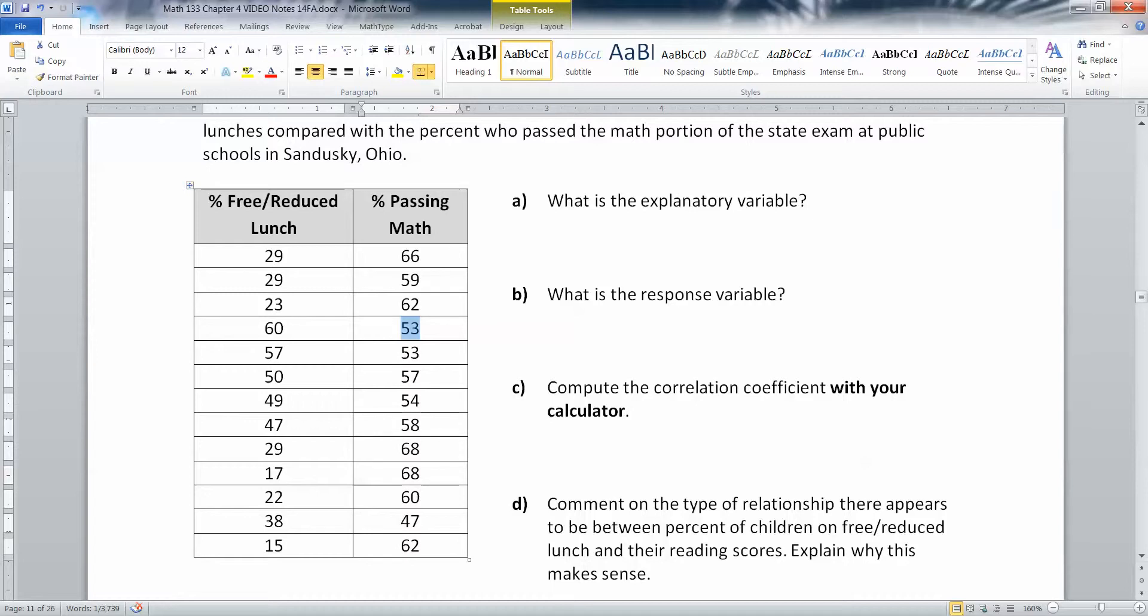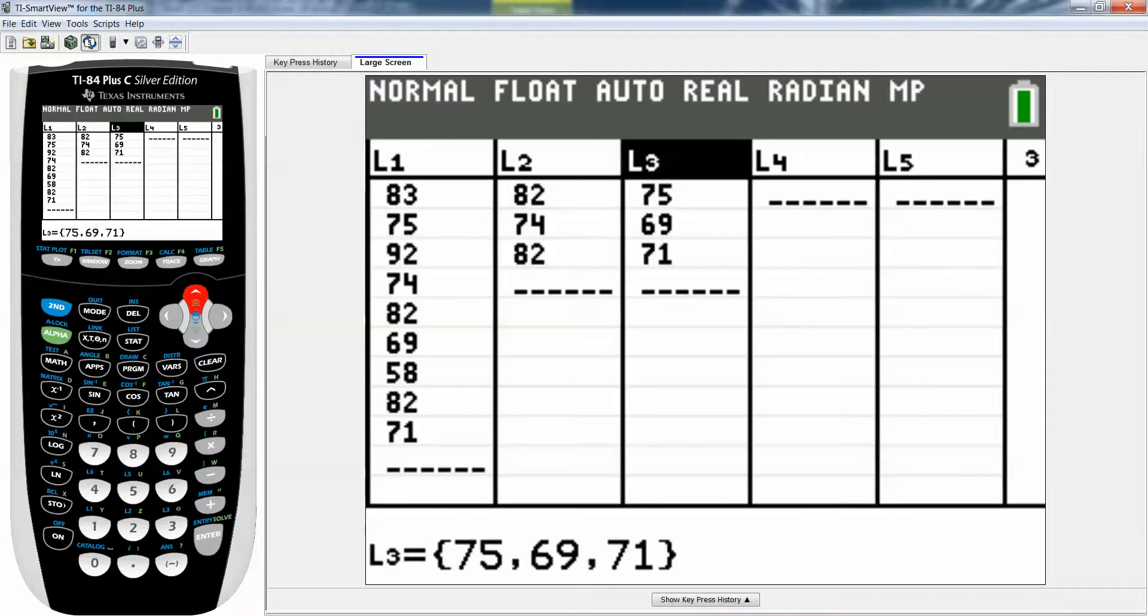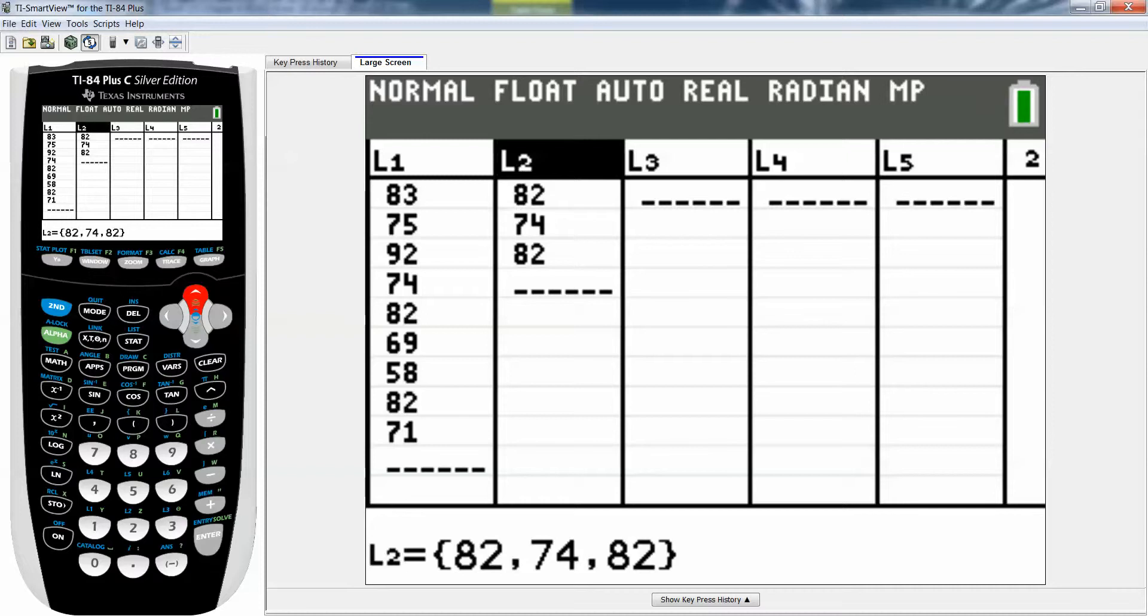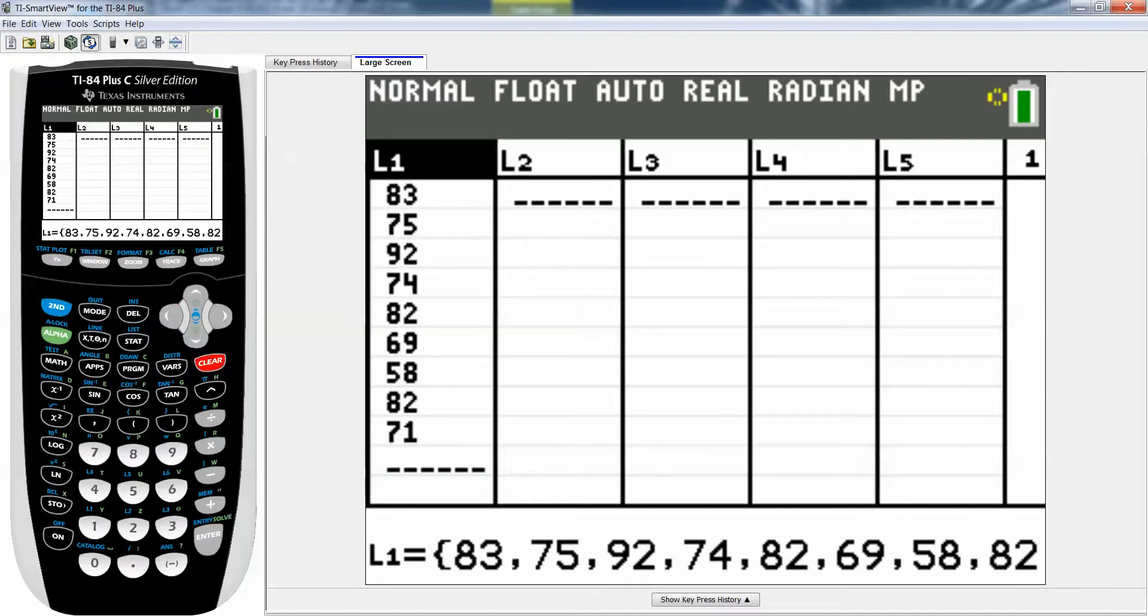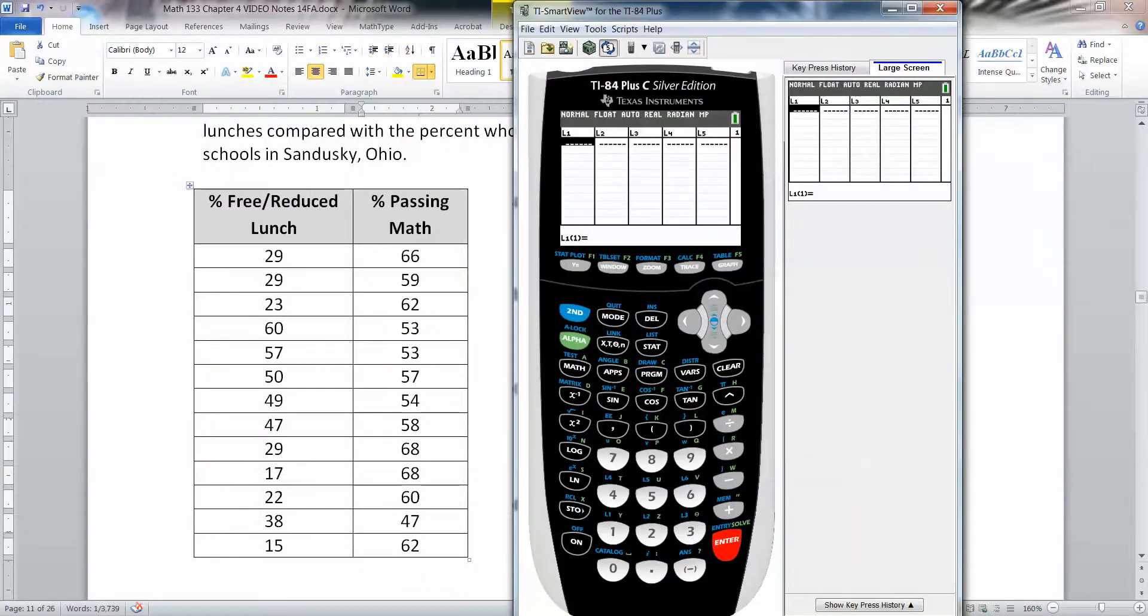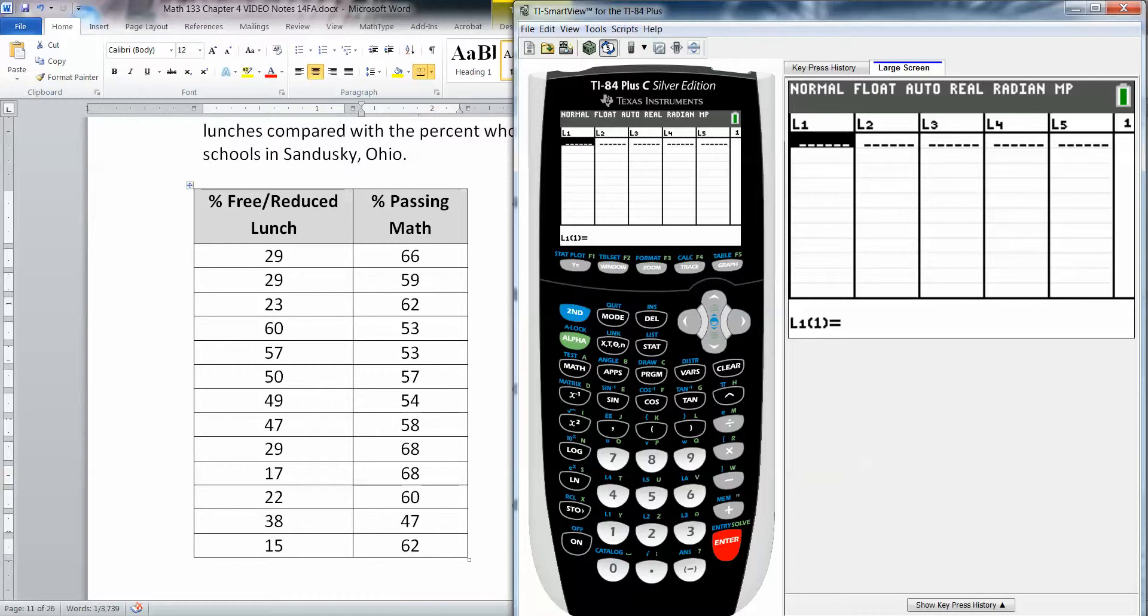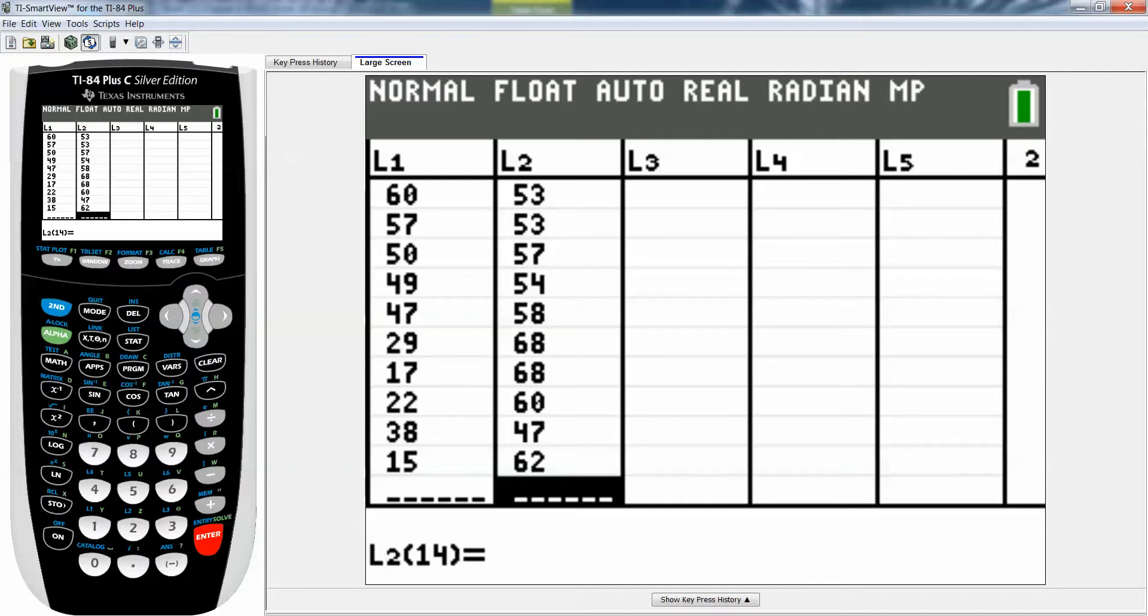I'm going to go to stat, press number one for edit or enter. I'm going to clear out all my old stuff from a previous video. Go up and clear it out, and then I want to enter in my data. I'm going to type 29 and so on. I'll be right back, I'm gonna finish filling out these data. All right, I've got all the data in there, right into the calculator.